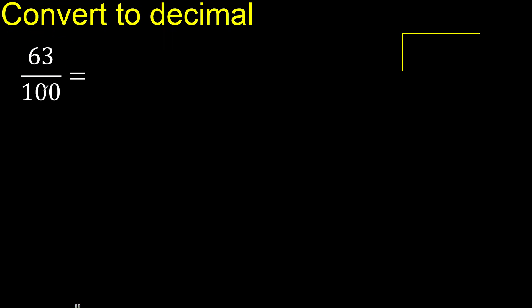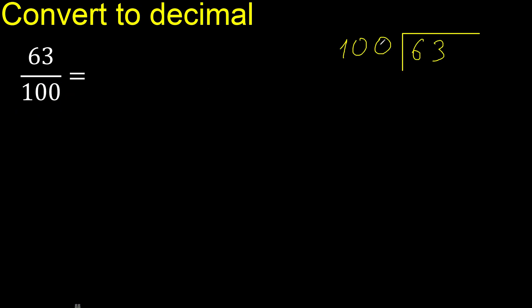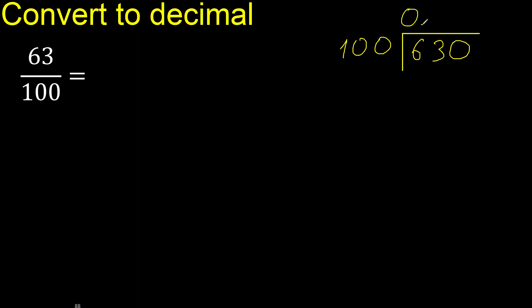63 divided by 100. 63 is less, therefore complete — always complete with 0. 0 point.